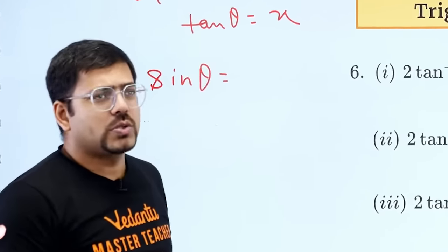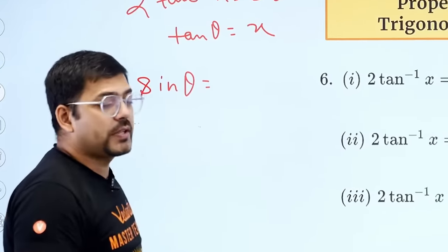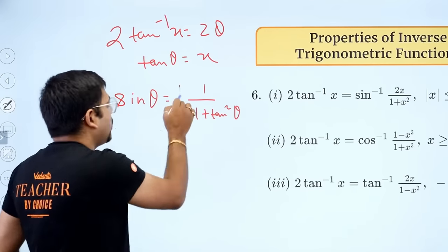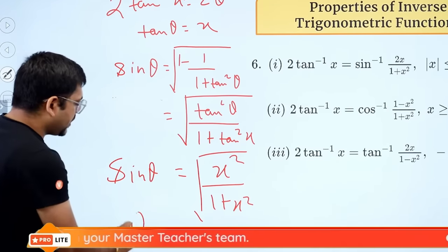1 plus tan square theta cos square. No, 1 plus tan square sec square. So the same square, let's see. You can see what'll happen here. The theta, what'll happen here?